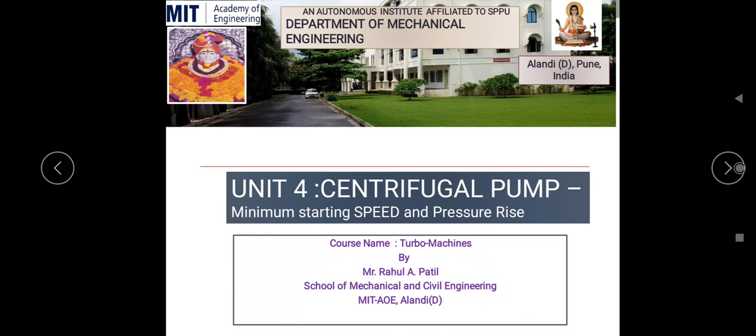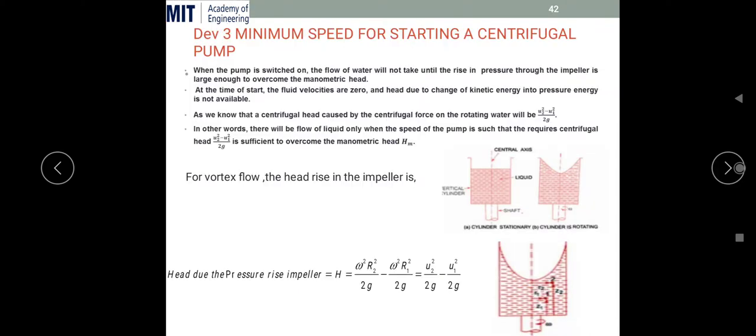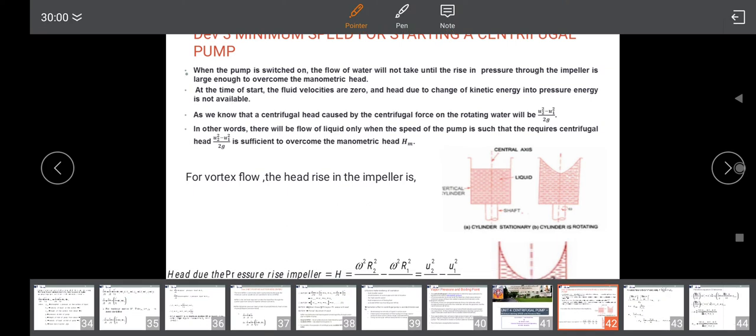Good morning students, this is Rahul Patil. Today we are going to discuss the minimum starting speed and pressure rise in a centrifugal pump. We know that the basic working principle of a centrifugal pump is forced vortex flow, in which when a certain amount of liquid is rotated by means of some external torque, there is a rise in head, and that head is used to transfer the liquid from one point to another.